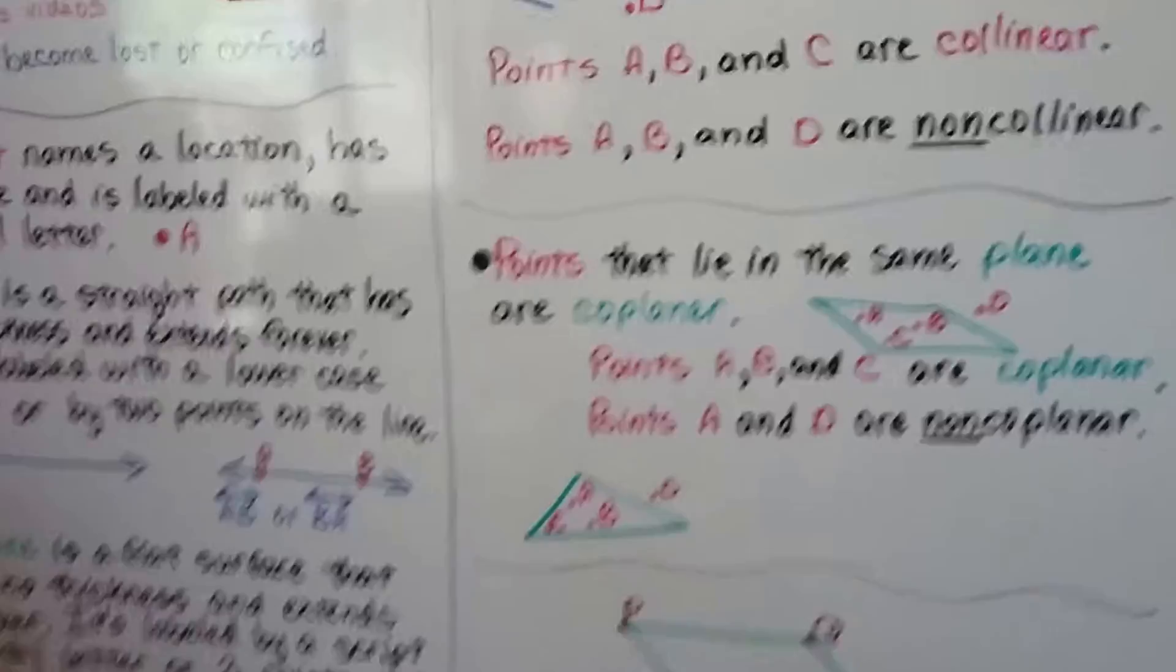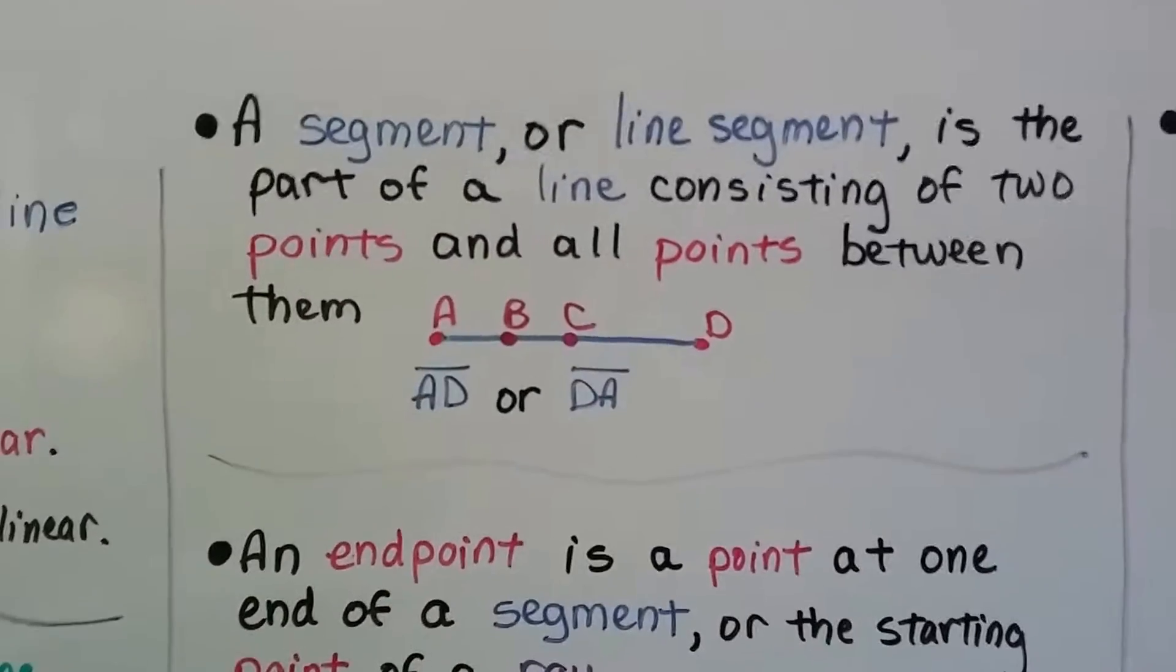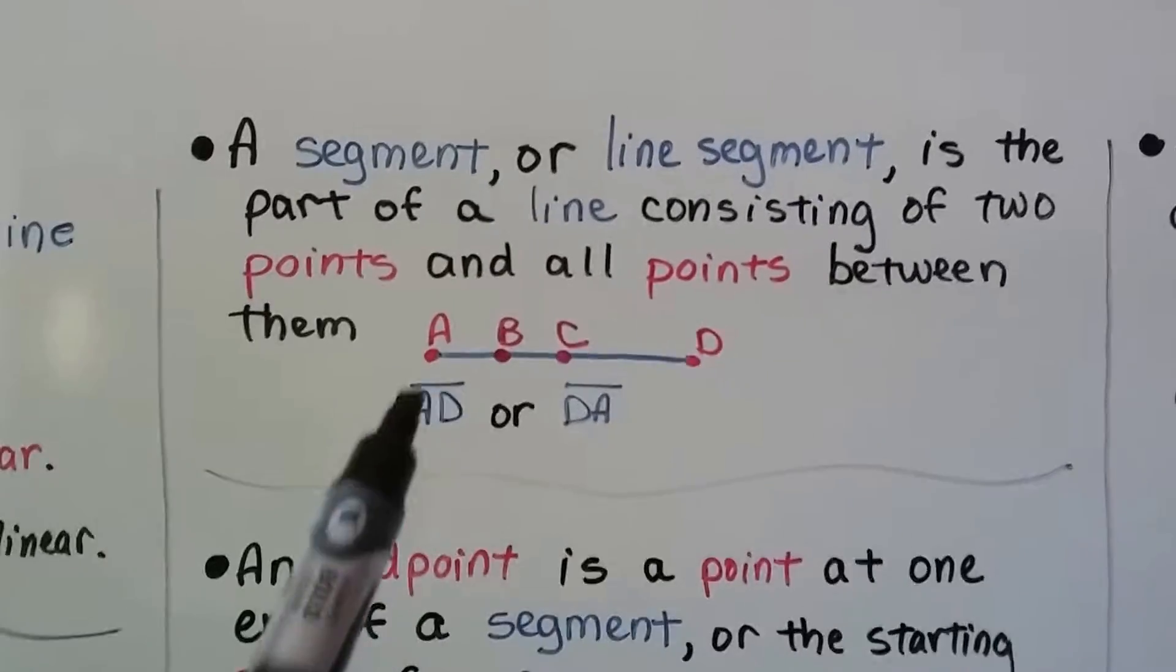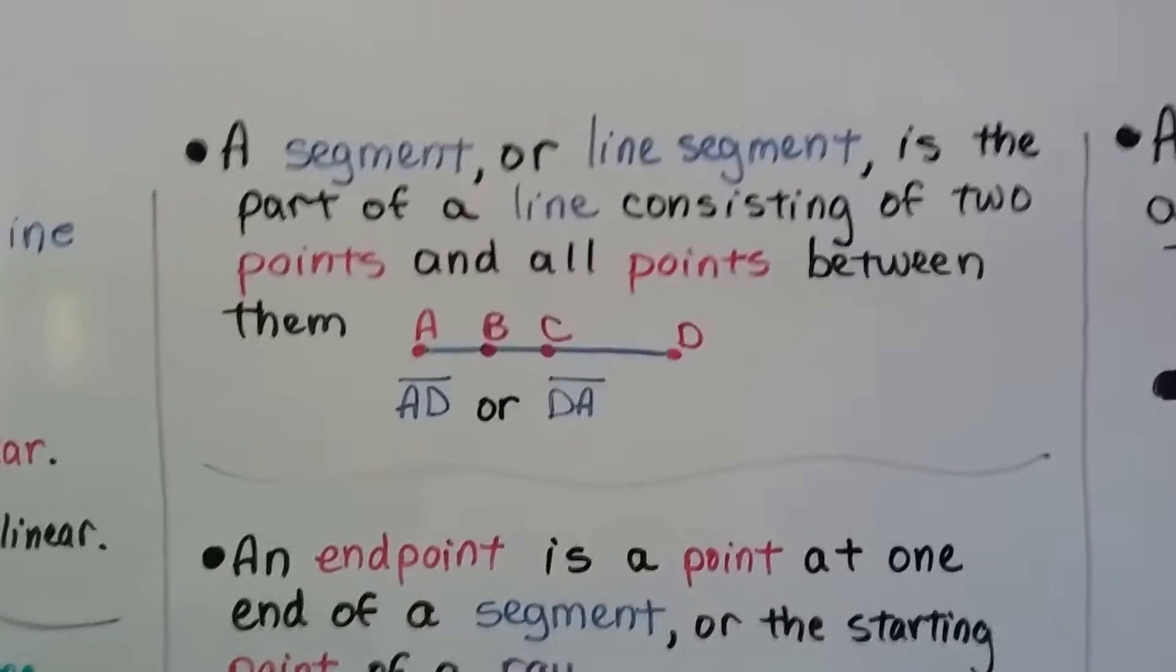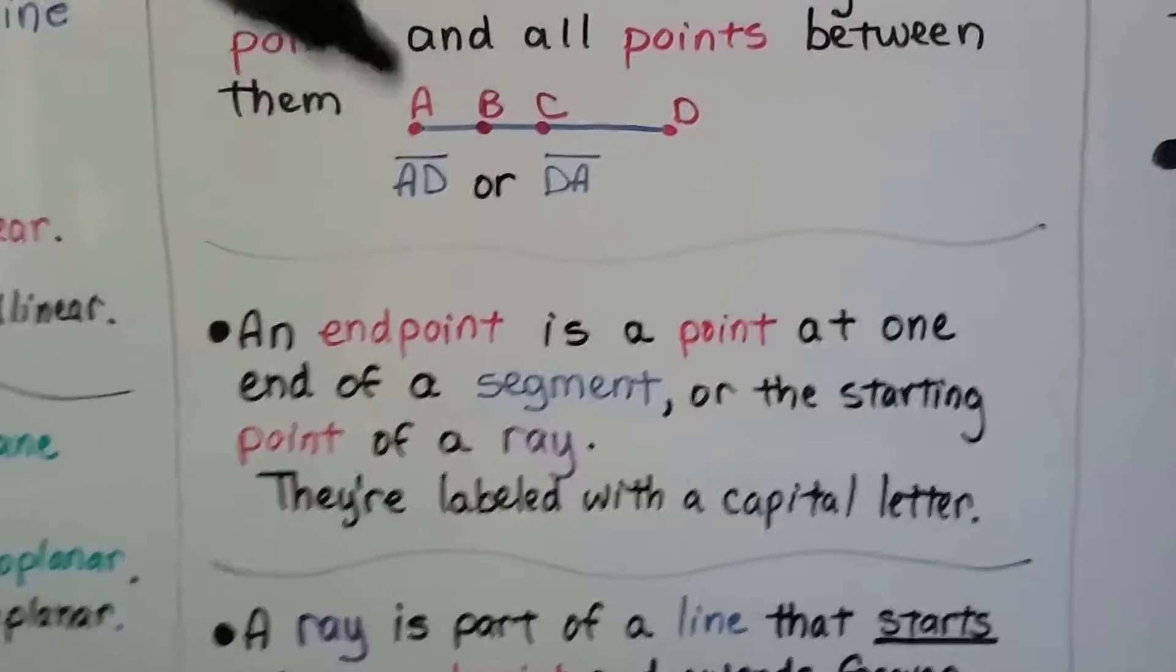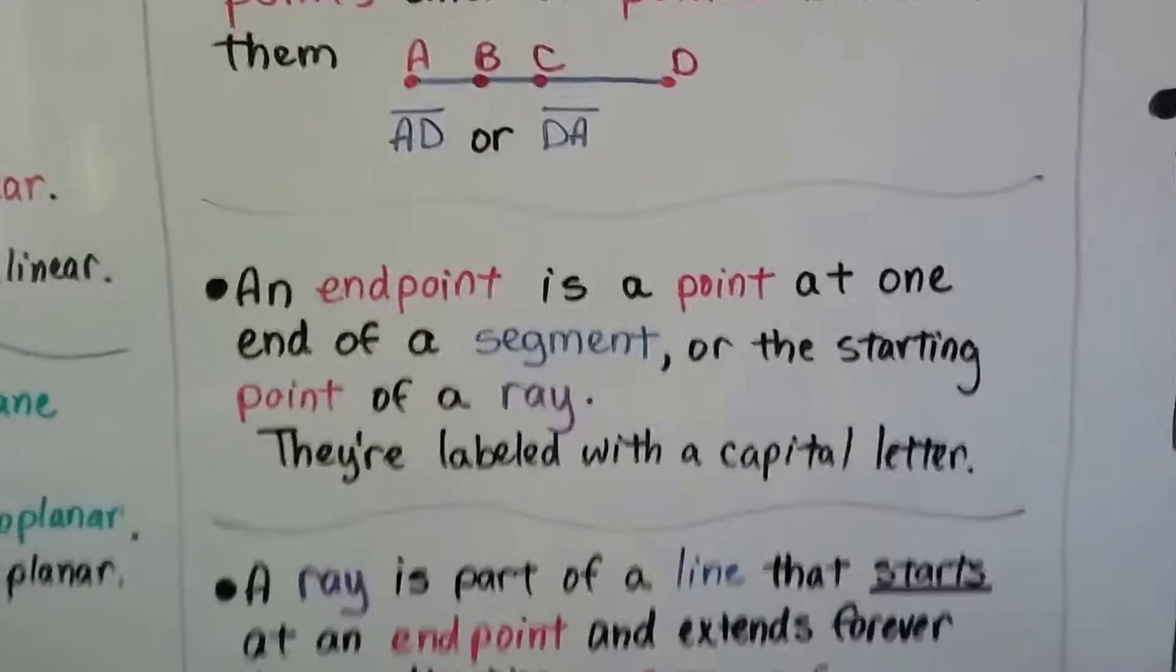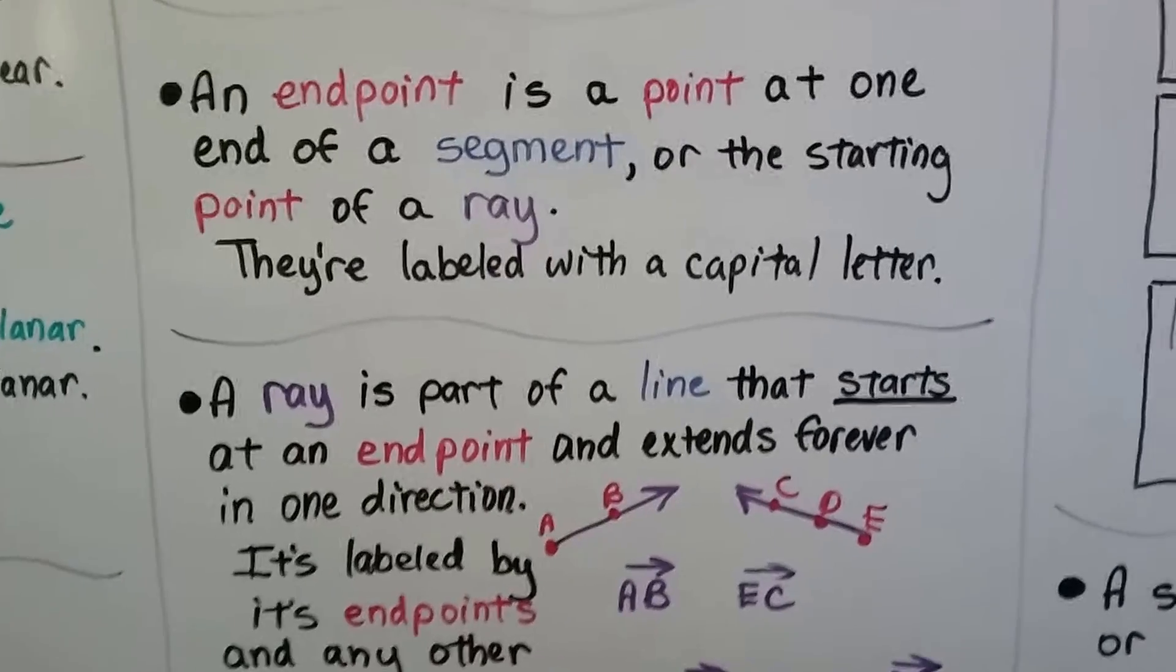It had arrows on both sides. Now, we just have a straight bar. And that tells us it's a line segment. So it starts at A and ends with D, or we could say it starts with D and ends with A. So it's line segment DA. An endpoint is a point at one end of a segment or the starting point of a ray. And they're labeled with a capital letter.